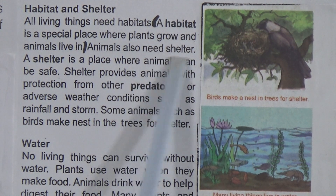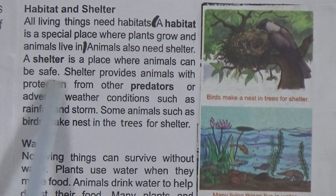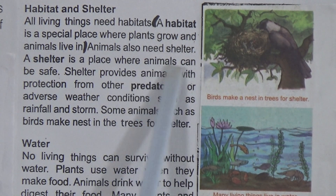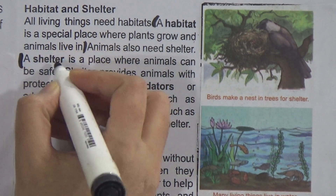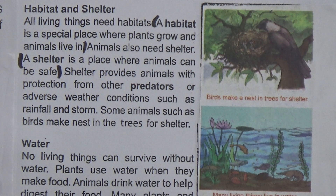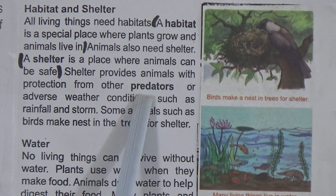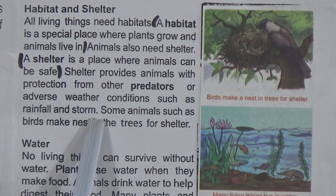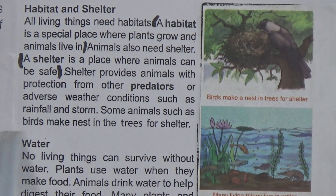Animals also need shelter. A shelter is a place where animals can be safe. Mark this line as it is important. Shelter provides animals with protection from other predators or adverse weather conditions such as rainfall and storms. Some animals, such as birds, may nest in trees for shelter.